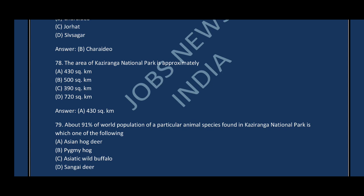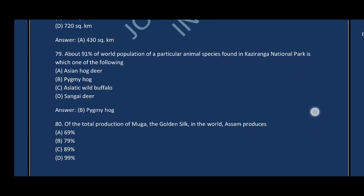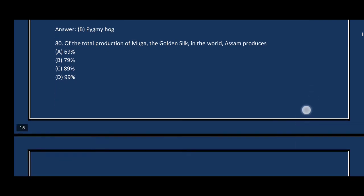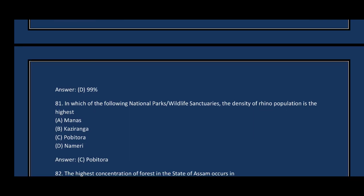Question number seventy-nine: About 91% of the world population of a particular animal species is found in Kaziranga National Park — which one? The correct answer is option B — Pygmy Hog. Question number eighty: Of the total world production of Muga golden silk, Assam produces — the correct answer is option D, 99%.